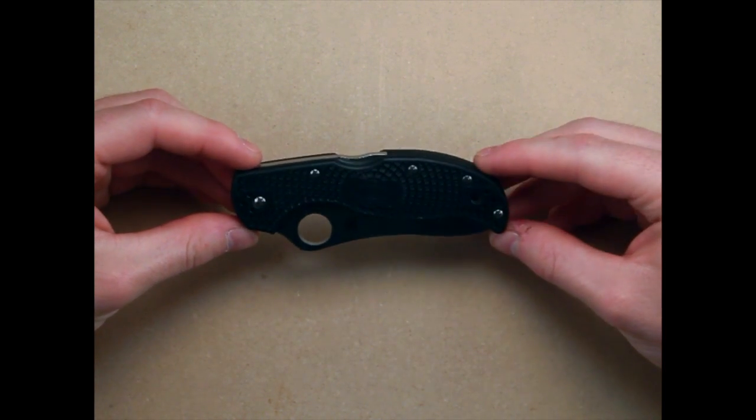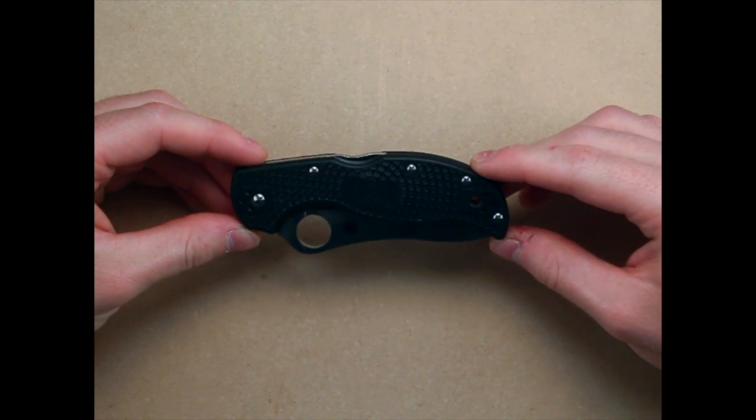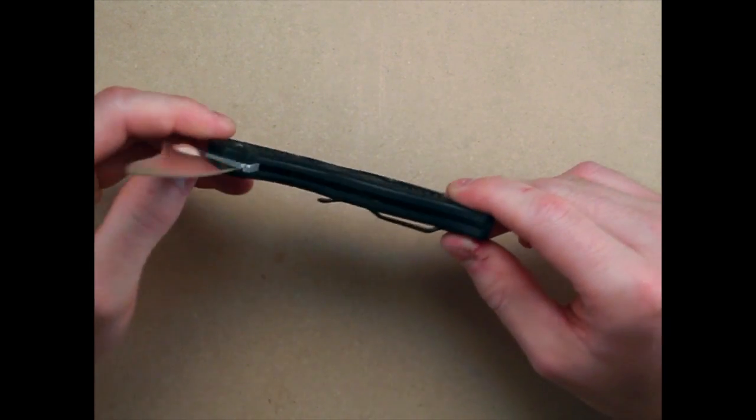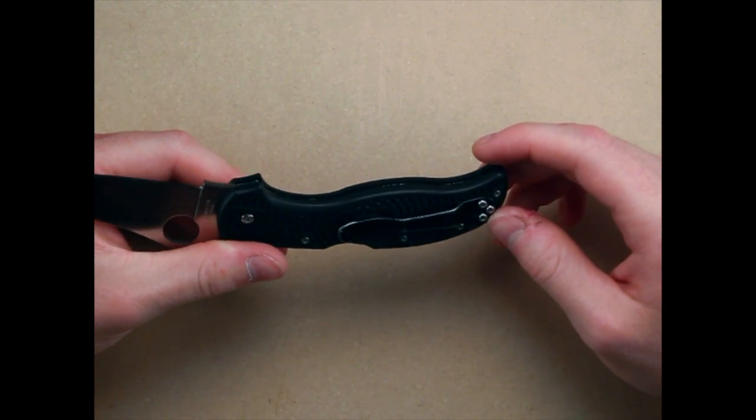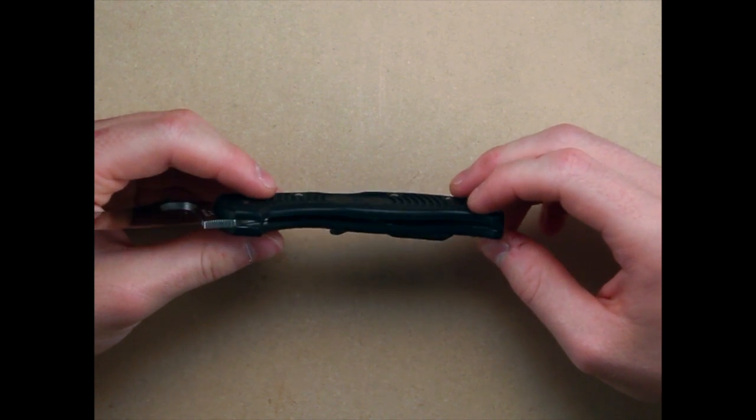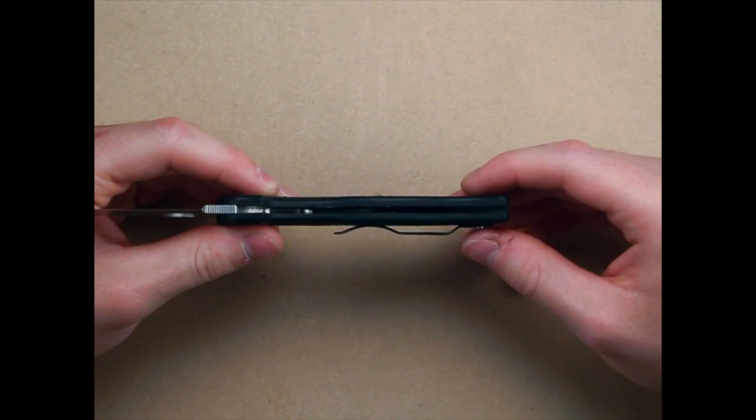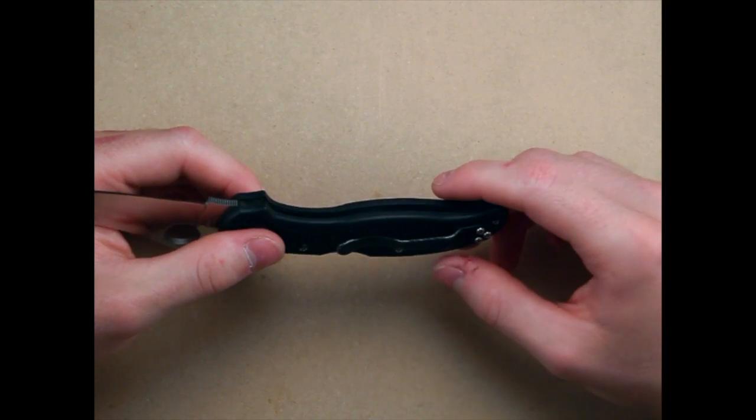It's between the Delica and the Endura in size and construction. It does have milled out stainless steel liners the full length of the grip or the handle, which saves on weight. Comes in at 3.4 ounces, so fairly lightweight.